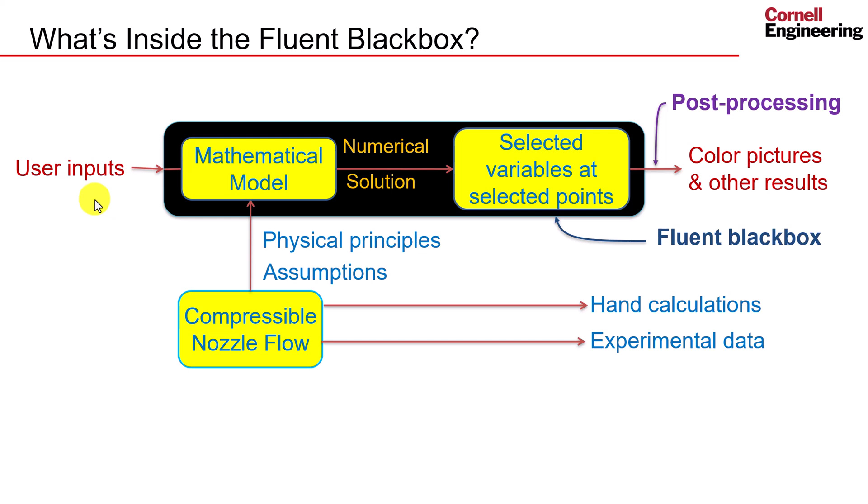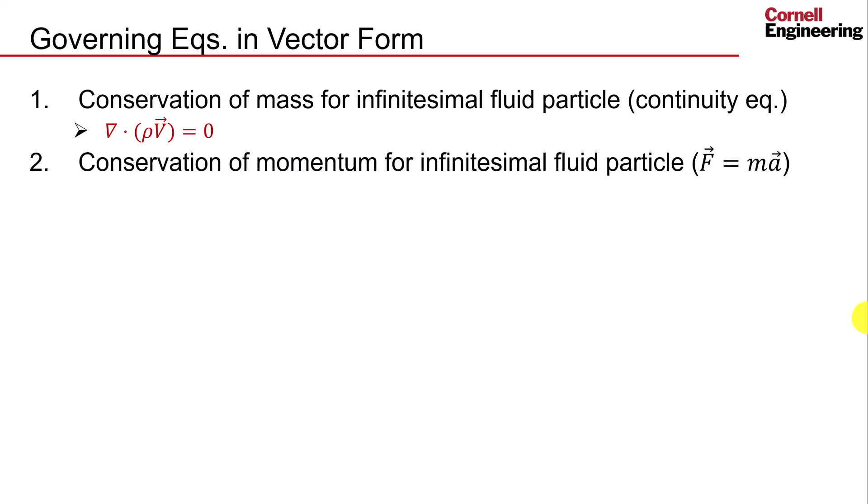This consists of governing equations and boundary conditions. For governing equations, we first have the continuity equation, which is conservation of mass applied to an infinitesimal fluid element. Here it is represented using vector notation. Next, we have a conservation of momentum equation, which arises from applying f equals ma to an infinitesimal fluid element. Expanding this vector notation produces two equations, one in each of our coordinate directions.